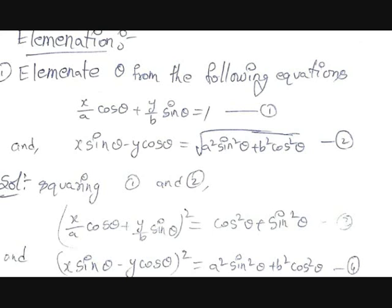What is meant by eliminating theta? Eliminating theta means you will have two or more given trigonometric equations and you should solve them such that the resultant equation should not contain sine, cosine, or any other trigonometric ratios or theta.